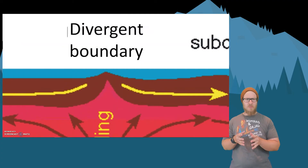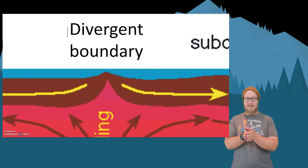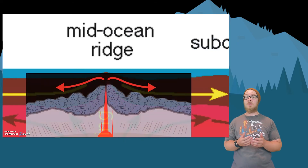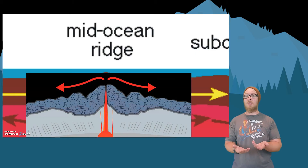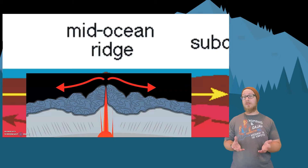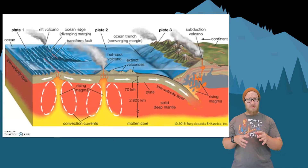The region where plates move apart is a divergent boundary, as two plates are diverging from each other. A geographic feature that occurs here is a ridge, and out of this ridge a slow trickle of magma will cool into new crust.